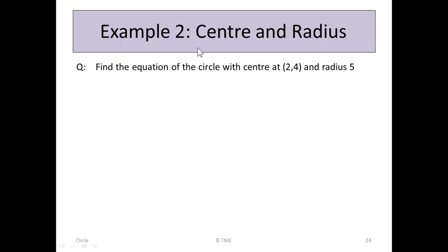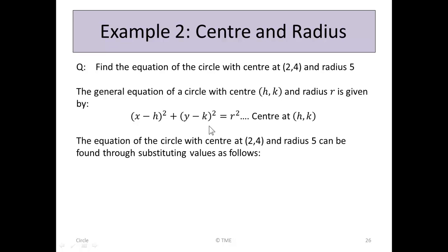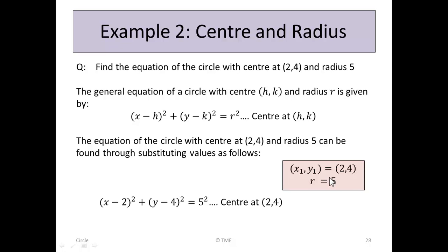They can vary the question: for example, find the equation of the circle with centre 2, 4 and radius 5. We just plug in the values using the formula. The equation with centre 2, 4 and radius 5 is found by substituting 2 for h, 4 for k, and 5 for r. Keep them in a box so they're reliable, and there's the equation of that circle as before. We don't have to go through all the expansion — just substitute.